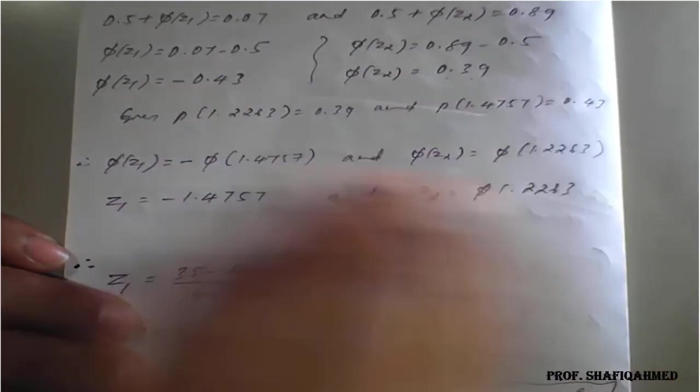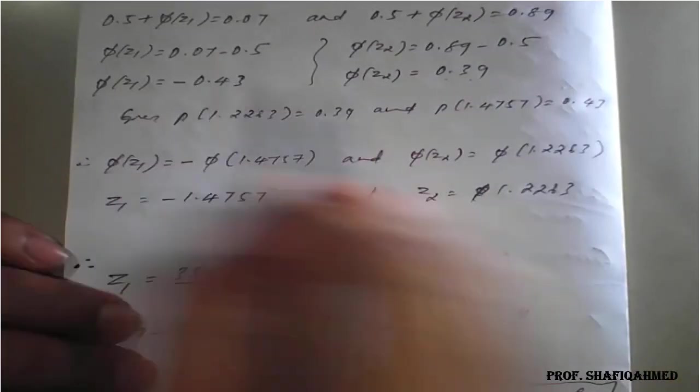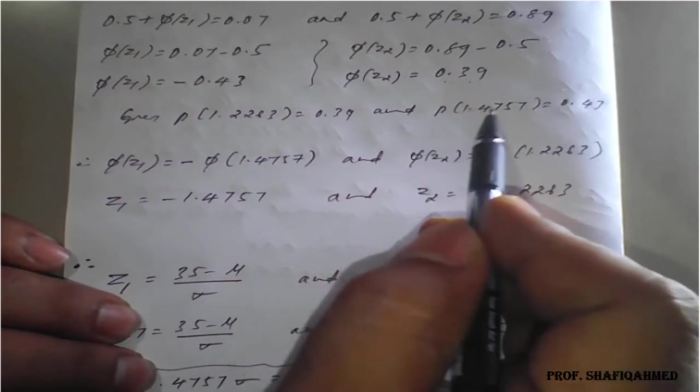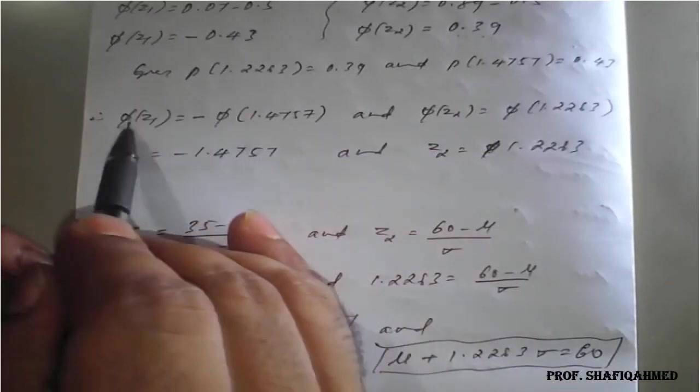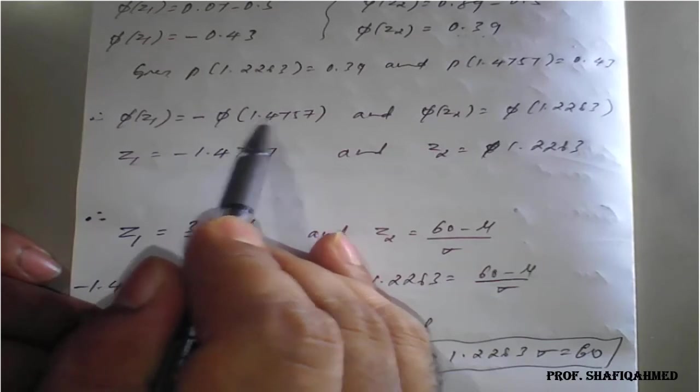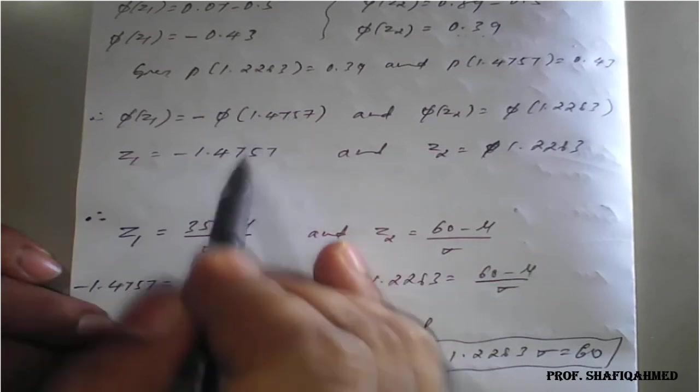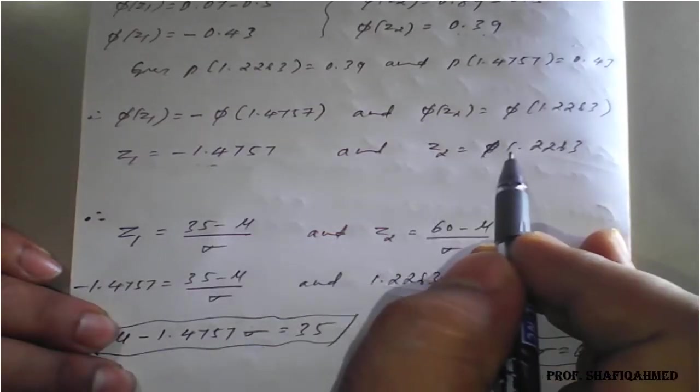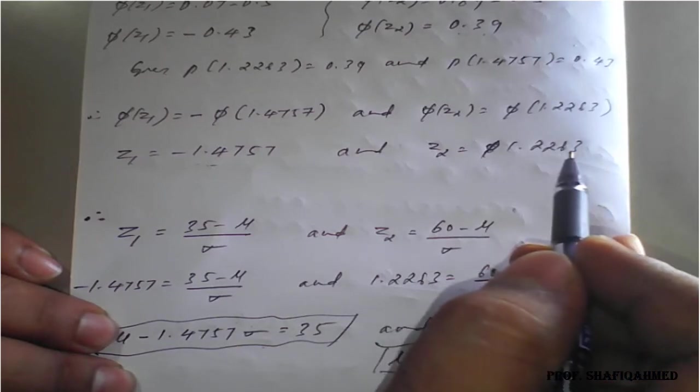And in place of 0.43, only this 0.43 will be replaced by phi of 1.4757. So phi 5 cancel. Z1 value is nothing but 1.4757. And Z2 value is 1.2263.